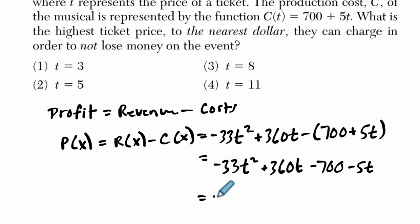And combine like terms, we get negative 33T squared plus 355T. I do 360 minus 5 minus 700.